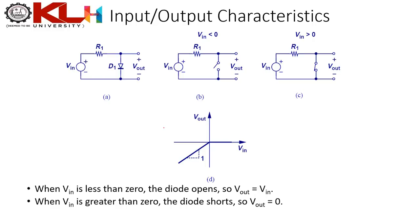Now let's look at input-output (IO) characteristics, which differ from IV characteristics. In IV characteristics the y-axis is current and x-axis is voltage. In IO characteristics we plot output voltage (V_out) on the y-axis versus input voltage (V_in) on the x-axis.